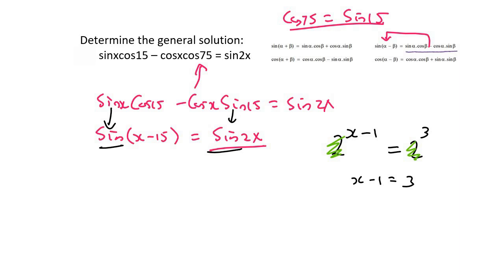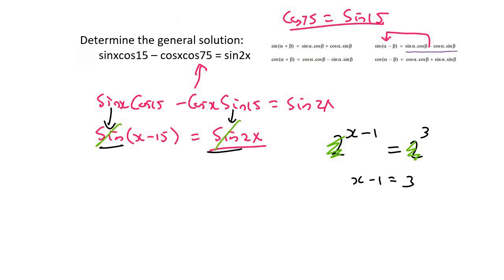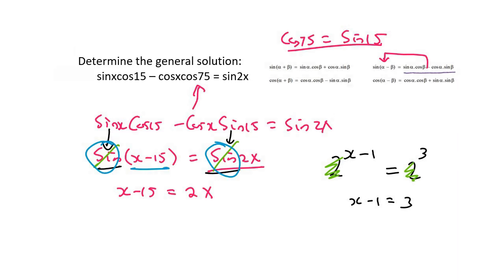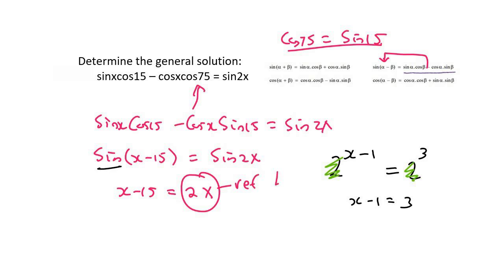Welcome back. What you might have found is that when you have sin and sin, you can ignore the sin and you're left with x − 15 = 2x. Stop right there — don't go any further. At this step, the right-hand side, 2x, is your reference angle. We're now working with sin on both sides.